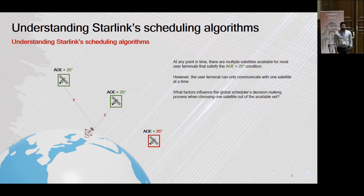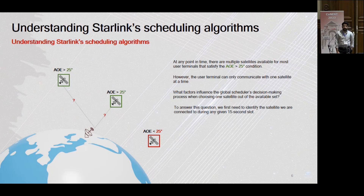We want to understand all the factors that go into the decision-making process of choosing one satellite out of all the ones that are available. However, Starlink doesn't provide us with that information, so we actually don't know what satellite we're connected to. In this talk, I'll go over a novel technique we developed to identify the current satellite we're connected to, and then go over the factors which influence this decision-making process.